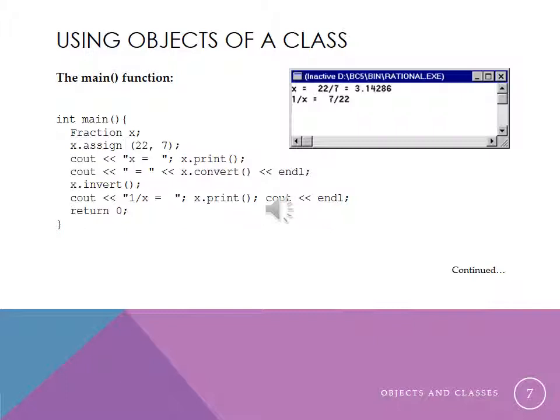Now since the data is private, we're using a public function in order to assign values to the numerator and to the denominator. And we're using the dot operator, like we saw in structs, in order to access one piece of it, in this case the assign function. So we've got x dot assign, and then the parameters in parentheses are constants, so they're obviously value parameters, the constant 22 for the numerator and 7 for the denominator. We send something to cout, you can see your output, x equal, and then x dot print will just display the fraction, 22 slash 7.